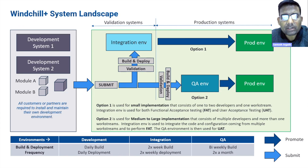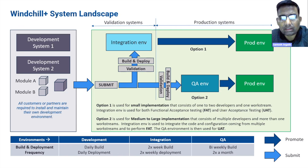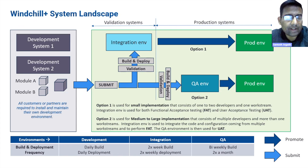For medium- to large-scale implementations, customers should purchase one additional environment called the QA environment. Here the assumption is parallel development streams and parallel teams working on different modules. All code gets integrated on the integration environment, integration testing is done there, and then the build package is deployed on the QA environment for user acceptance testing. After that, the package is promoted to production. In both scenarios, the development environment must be purchased and maintained by the customer — either on customer cloud or on-premise.